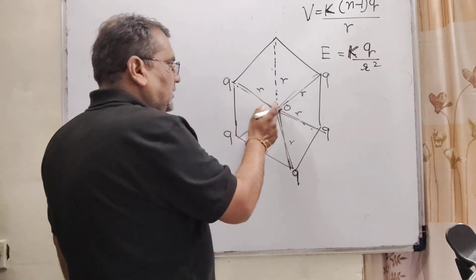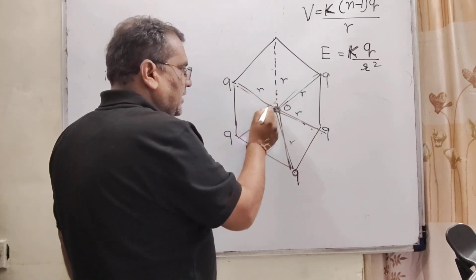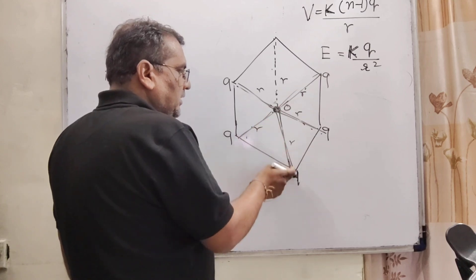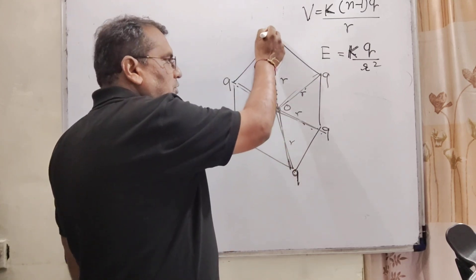And so, therefore, at the center, here they cancel out each other. Only this charge. Because here is no charge. So, only resultant electric field E equal to k into q by r square.